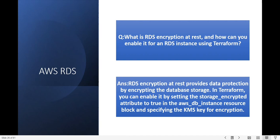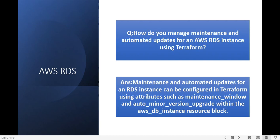Next question: how do you manage maintenance and automated updates for AWS RDS instances using Terraform? Maintenance and automated updates for RDS instances can be configured in Terraform using attributes such as maintenance_window and auto_minor_version_upgrade within the AWS DB instance resource block.